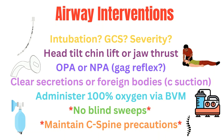Always maintain C-spine precautions if indicated, especially in your trauma patients. Remember that OPAs keep the tongue out of the way from blocking the airway path. But if a patient has a gag reflex, do not place an OPA, as it can stimulate them to vomit and they could aspirate. When placing an NPA, use plenty of lube. But remember that if there is facial trauma, you should not be placing an NPA.